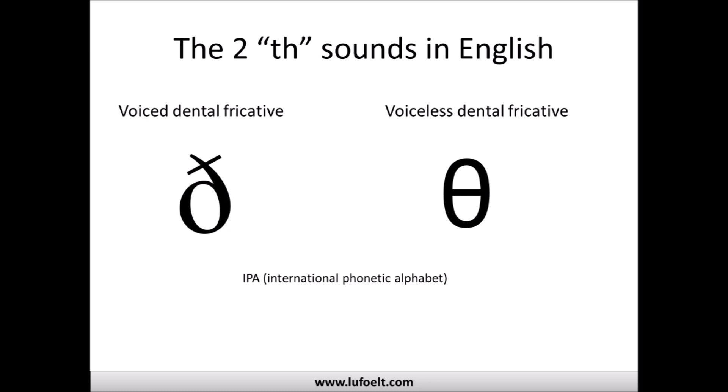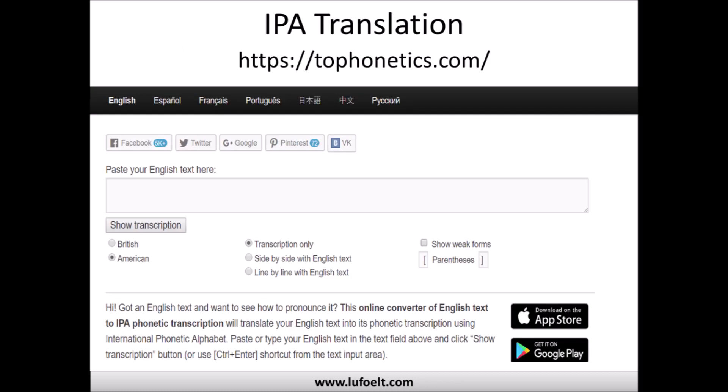What used to be called 'eth' is now called the voiced dental fricative, and what used to be called 'thorn' is now called the voiceless dental fricative. The letter has changed to sort of look like a zero with a slash through the middle of it. If you're unfamiliar with the IPA alphabet, I have two great resources for you.